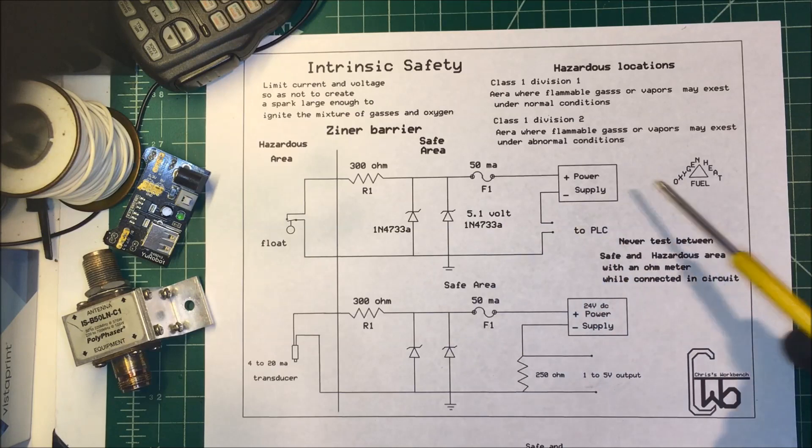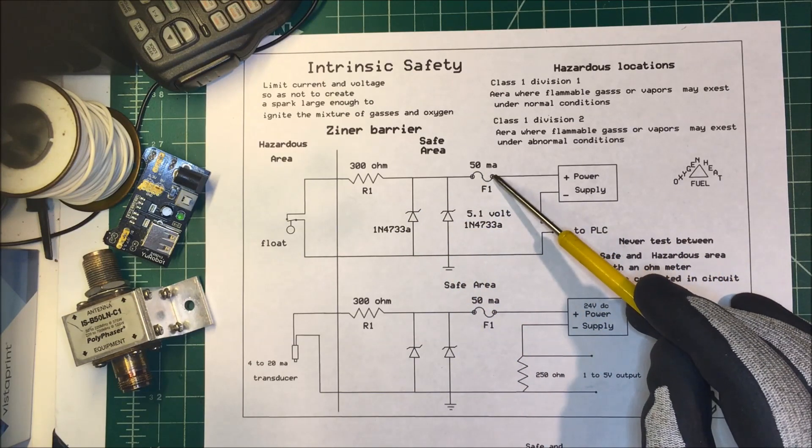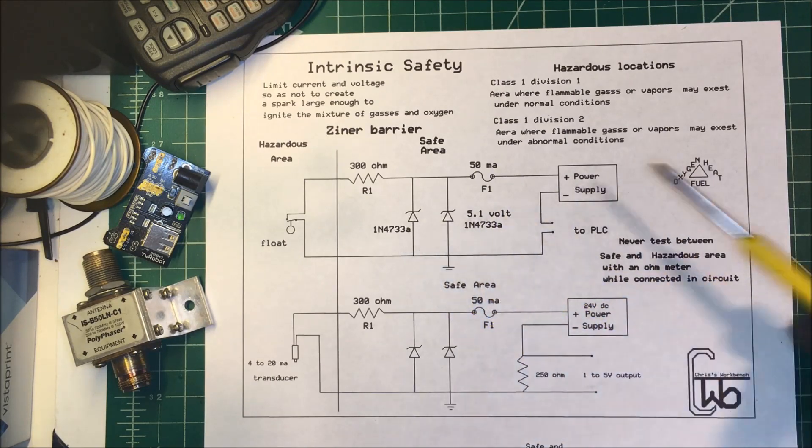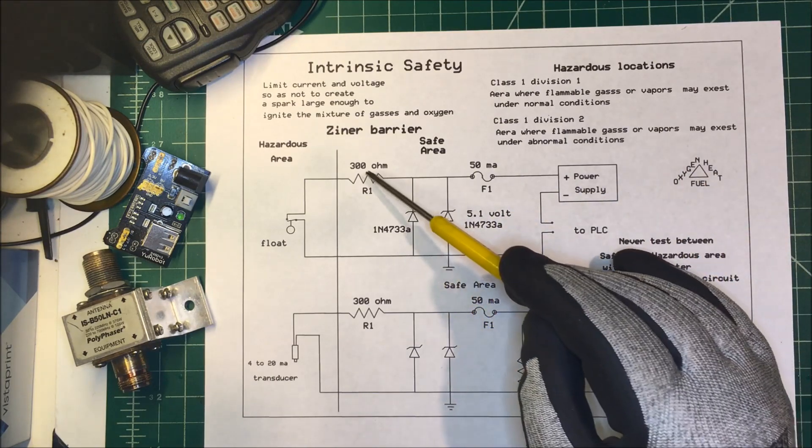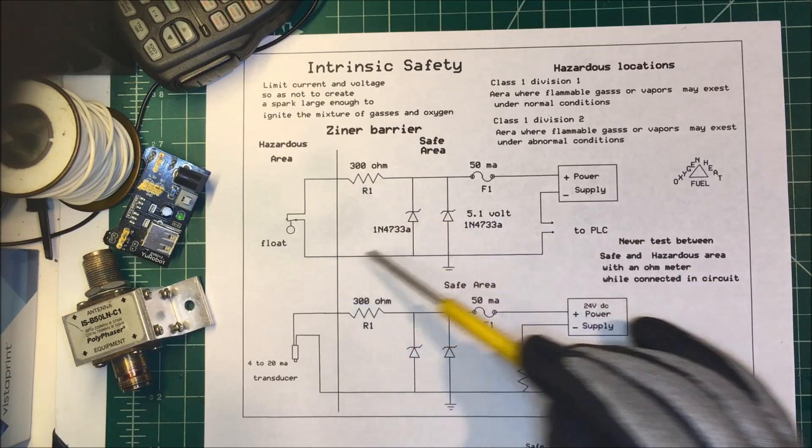So we use this Zener barrier. It has just three components: a fuse, usually about 50 milliamp, then a couple of Zener diodes, maybe two or three just for redundancy, and then some kind of resistor to limit the current into that area.